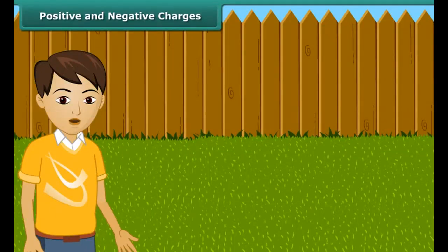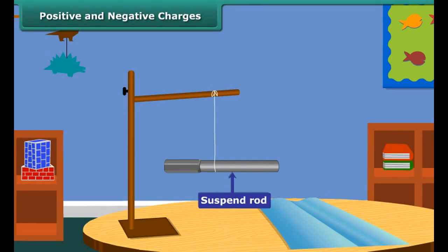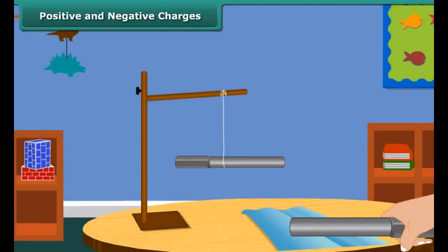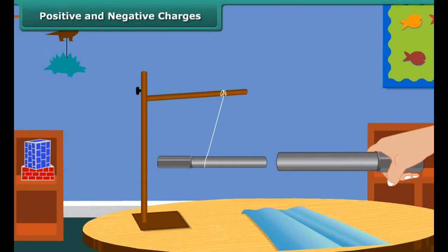Let us perform an activity to understand positive and negative charges. Take an ebonite rod and rub it with a piece of woolen cloth. Now suspend the rod by tying a thread through its middle. Now charge another ebonite rod in the same way and bring it close to the suspended rod. What do you notice? The suspended rod moves away from the second one.